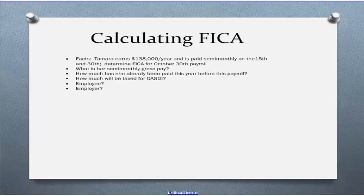Tamara earns $138,000 a year and is paid semi-monthly on the 15th and the 30th. Determine FICA for the October 30th payroll. First let's figure out how many pay periods she's had so far before this October 30th payroll. January through September she was paid 2 times those months, so 9 times 2 is 18. She's already been paid on October 15th, so we'll count one more. She's had 19 pay periods. Let's figure out what her semi-monthly gross pay has been.